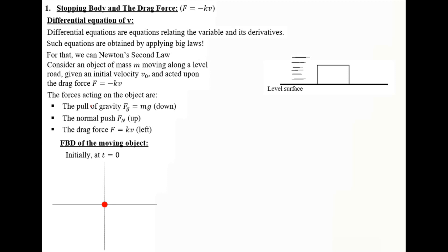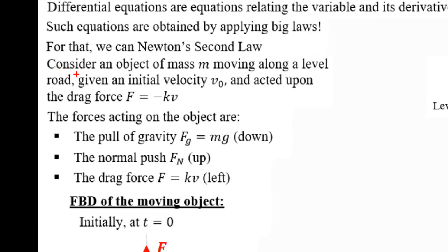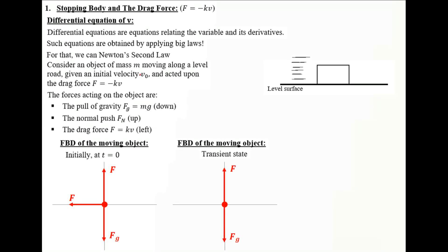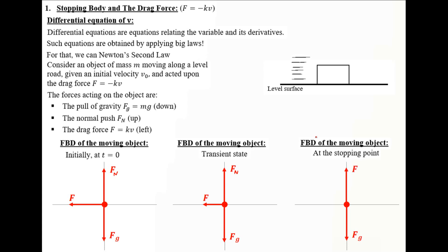Initially at T equals 0, we have an initial velocity. The pull of gravity and normal force are present, and since the object is moving, there is a drag force pointing toward the left. As the object starts losing speed in the transient state, the drag force decreases in magnitude. The pull of gravity and normal force remain unchanged. Finally, when the object stops, velocity becomes zero, so the drag force is zero, and only gravity and the normal force act.